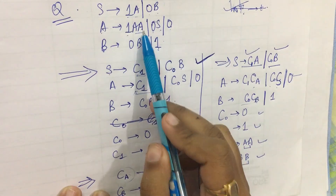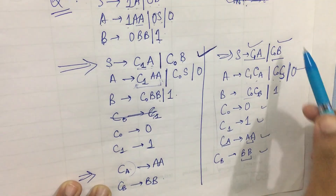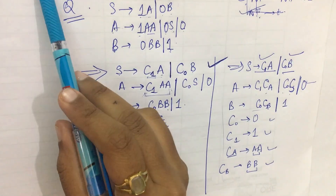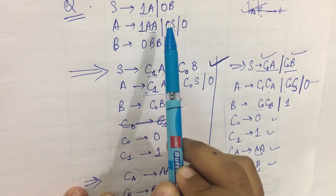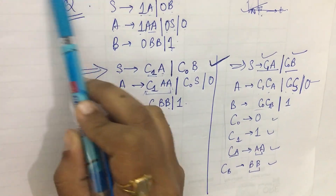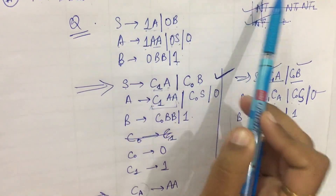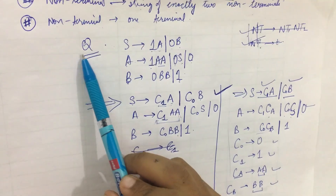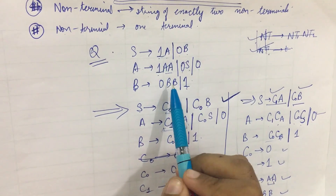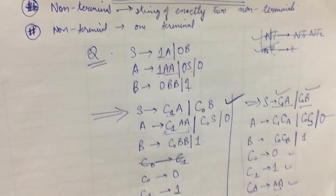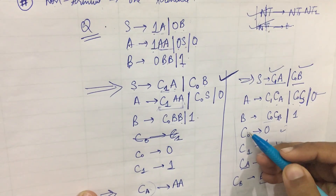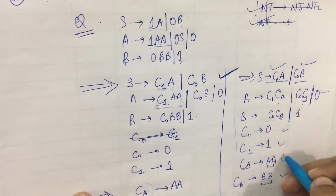Finally, we have converted this grammar into Chomsky normal form. The basic condition to remember is that you must convert all production rules so that one non-terminal gives either a string of exactly two non-terminals or a single terminal. Simply substitute and define the new variables or non-terminals that you have introduced. That's all.